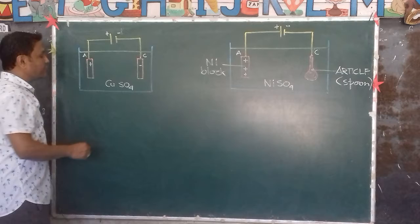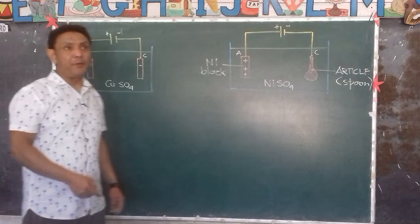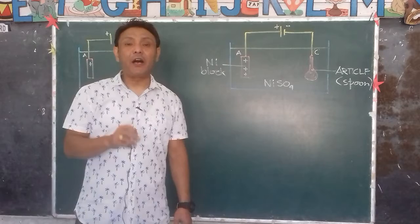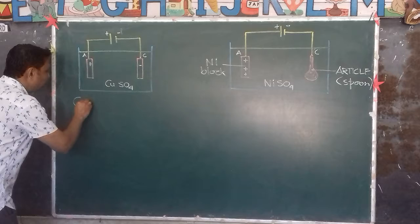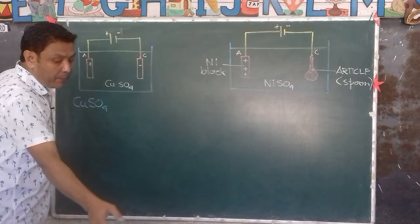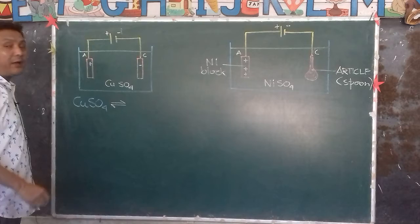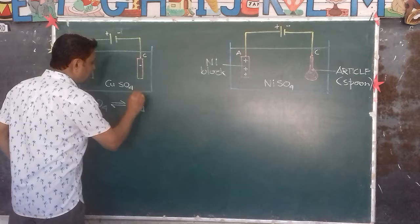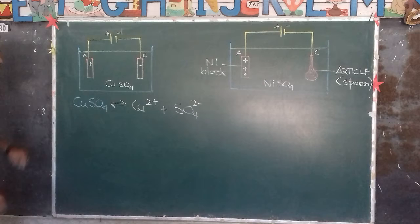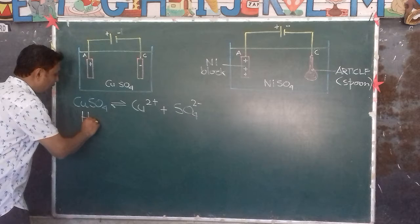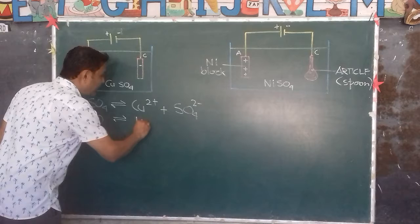The electrolyte is copper sulfate, CuSO₄. The color of copper sulfate is blue. Now, since copper sulfate is soluble in water, it dissociates into Cu²⁺ and SO₄²⁻. Since we have water in the aqueous solution, water also dissociates into H⁺ and OH⁻ ions.